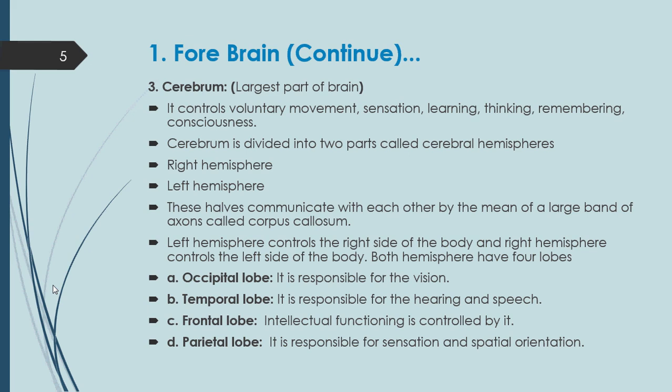Both hemispheres have four lobes. Number one: occipital lobe — it is responsible for vision. Number two: temporal lobe — it is responsible for hearing. Number three: frontal lobe — intellectual functioning is controlled by this lobe. Number four: parietal lobe.